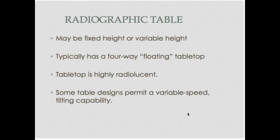The radiographic table may be fixed height or variable height. Some floor tables are not able to adjust down, but basic x-ray tables do raise and lower, which is really nice. We have the floating tabletop, which is a four-way floating tabletop. In fluoro it's usually a fixed-height table with buttons to move the table in four directions. The tabletop is highly radiolucent, usually carbon fiber, and some table designs permit variable-speed tilting, though most now have just one speed.